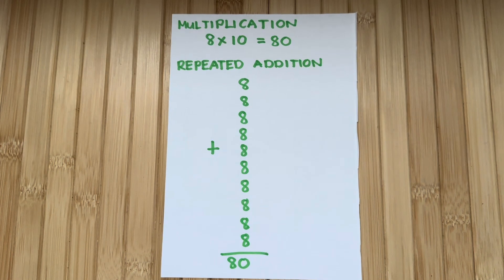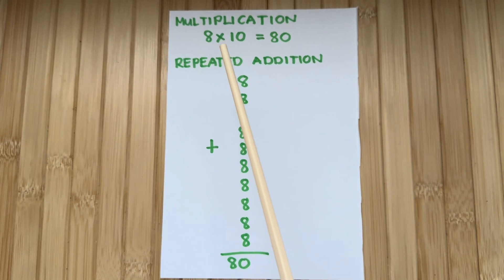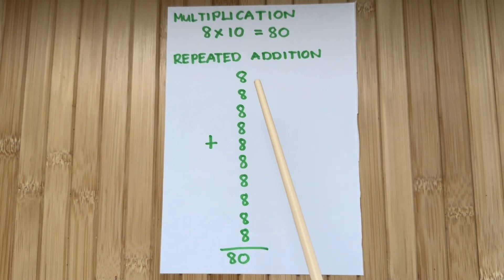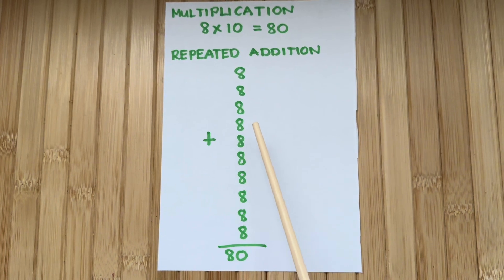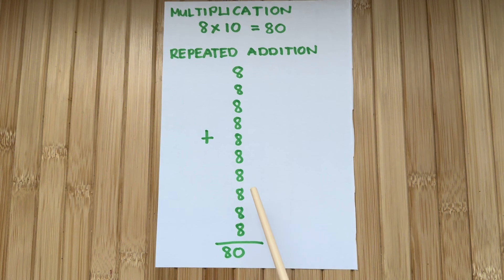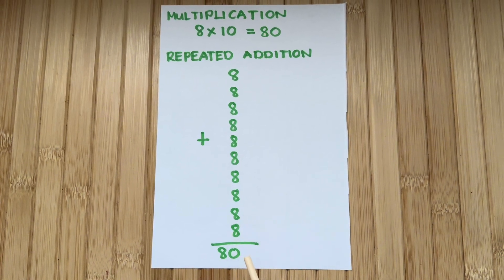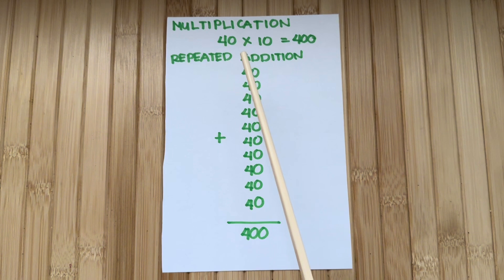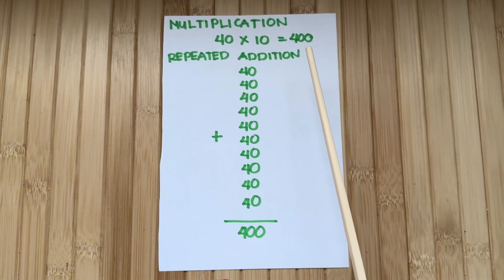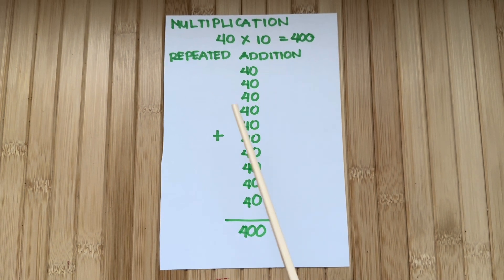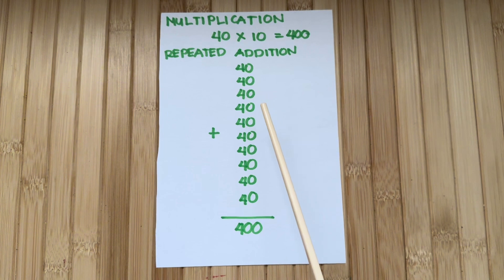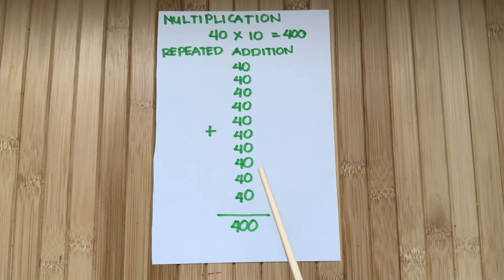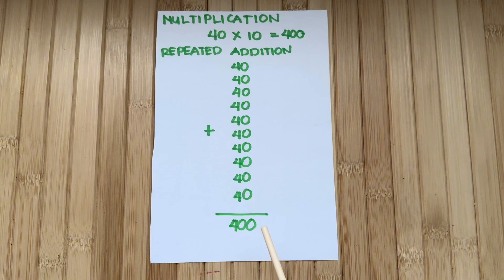And now join me and let's check out some examples. Let's start with multiplication: 8 times 10 is equals to 80. While in repeated addition, it is 8 plus 8 plus 8 plus 8 plus 8 plus 8 plus 8 plus 8 plus 8, and it's equals to 80. Next example. In multiplication, 40 times 10 is equals to 400. In repeated addition, it is 40 plus 40 plus 40 plus 40 plus 40 plus 40 plus 40, and it is equals to 400.